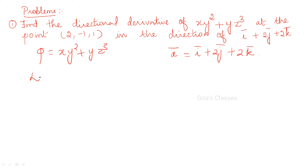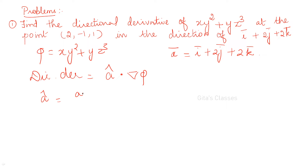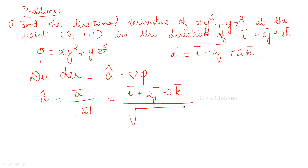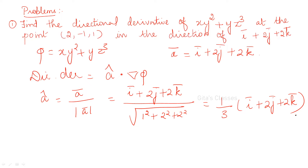The required directional derivative is a_cap dot del phi. A_bar is given, so a_cap is equal to a_bar divided by modulus of a_bar, which gives the unit vector. That is i plus 2j plus 2k divided by root of 1² plus 2² plus 2², which is root 9. Therefore, a_cap equals 1/3 times (i plus 2j plus 2k).